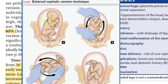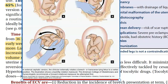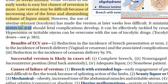Looking at the external cephalic version technique: the baby is breech and they are turning it anti-clockwise till it becomes a cephalic presentation — that is, the head comes down. The person rotates the breech, and if it is a transverse lie they also turn it, basically to a vertex position.